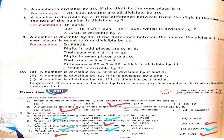For example, take 3248. The ones place is 8; multiply 8 by 2 to get 16. The remaining number is 324. So 324 minus 16 is 308. Since 308 is divisible by 7, it means 3248 is divisible by 7.